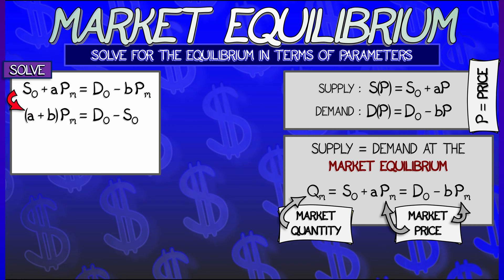Then what I can do, move all the p-sub-m's over to the left-hand side, factor out an a plus b, and divide by that to get p-sub-m equals d-naught minus s-naught divided by a plus b.